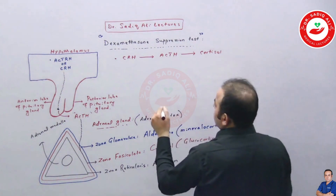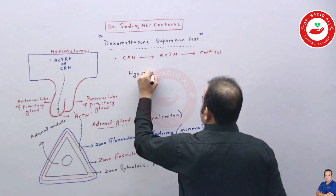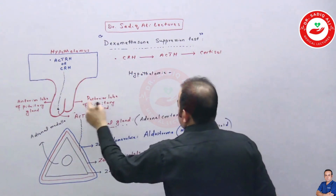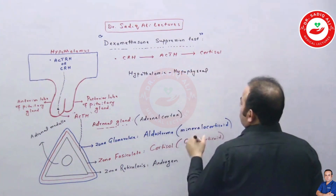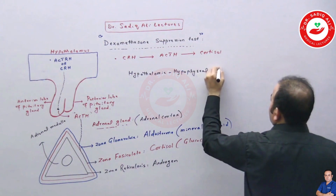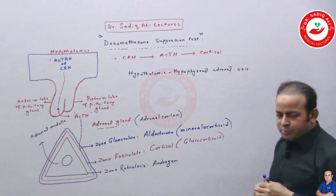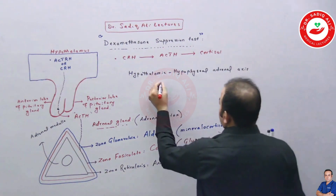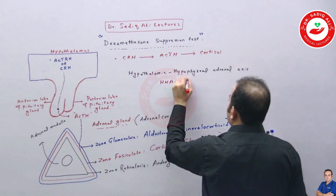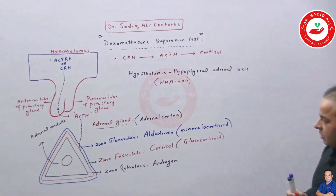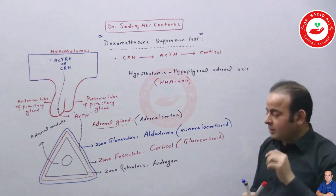This whole mechanism — from the hypothalamus releasing CRH, to the pituitary releasing ACTH, to the adrenal gland releasing cortisol — is known as the hypothalamic-hypophyseal-adrenal (HHA) axis. Once you understand this physiology, the entire topic becomes much easier.